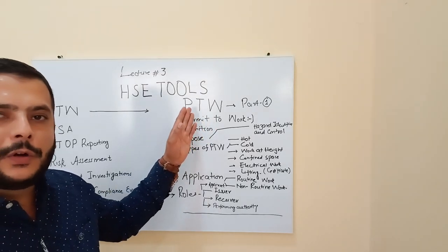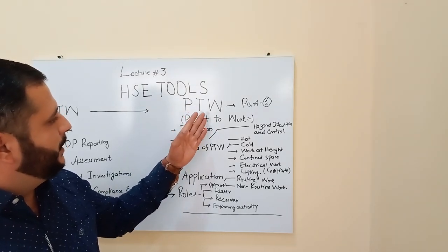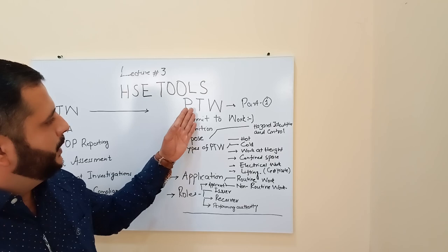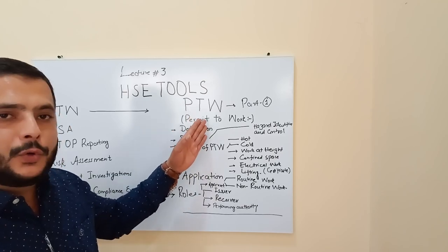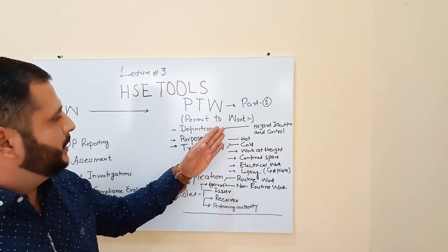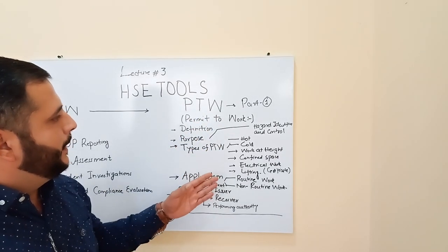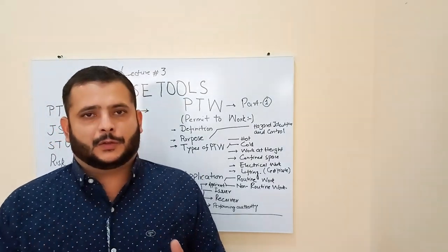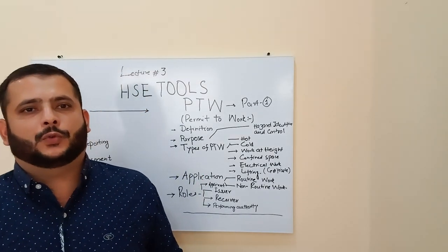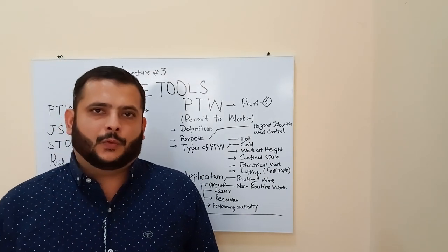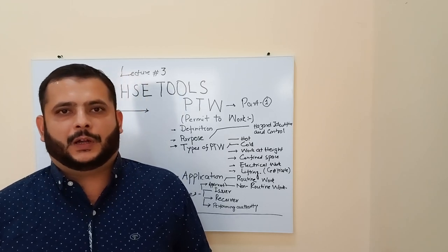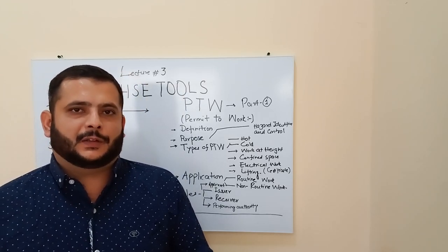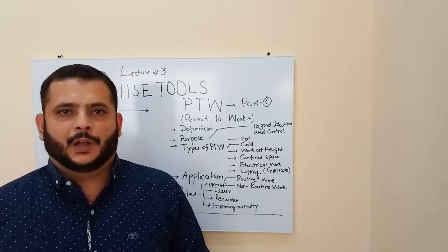PTW is what it is called in the organization. P stands for Permit, T stands for To, and W stands for Work. First of all we will go through its initial meaning — why it is required and what is the purpose of giving this name Permit to Work.